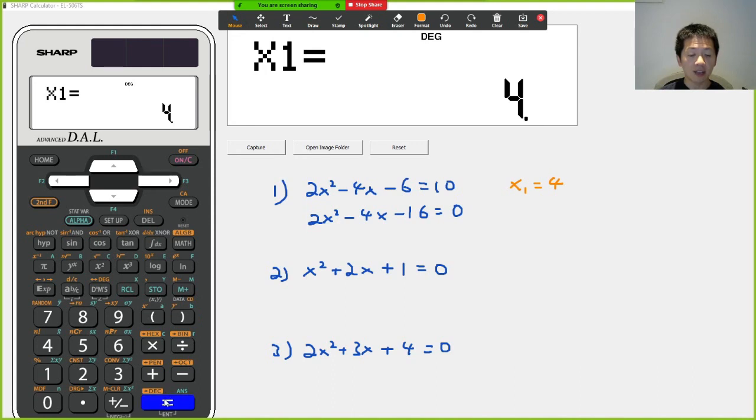How about the other answer? If I press enter again, or equal again, x2 equals to minus 2. So I have x2 equals to minus 2. So what this means here is solving the quadratic equation that we have two intersecting points.